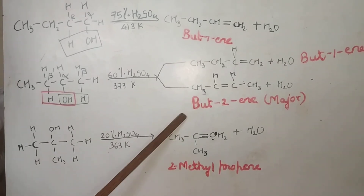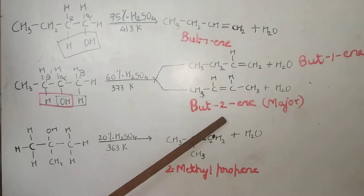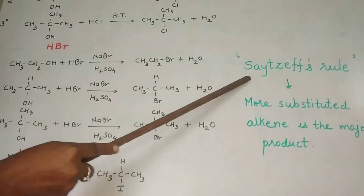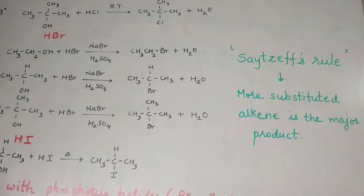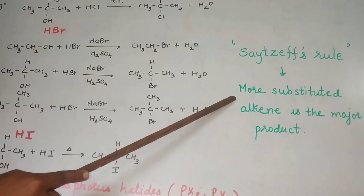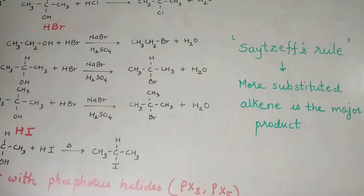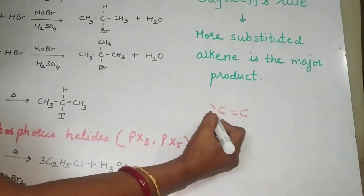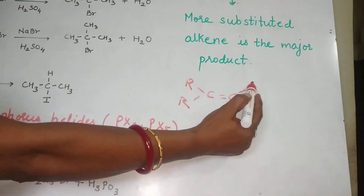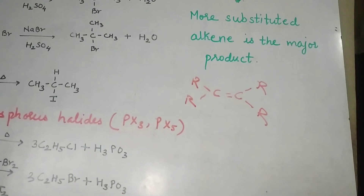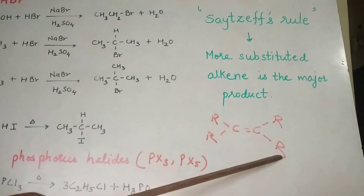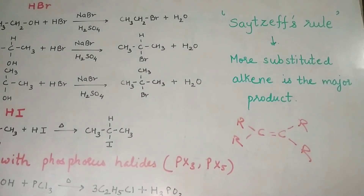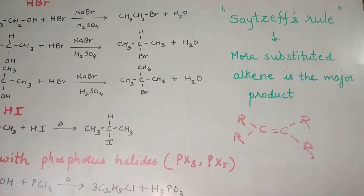In the previous reaction where two products are formed, the formation of the major product but-2-ene is explained on the basis of Saytzeff's rule. Saytzeff's rule says that a more substituted alkene is formed as the major product. The more substitutions present on the double bond carbons, the more substituted the alkene — and that more substituted alkene is formed as the major product.